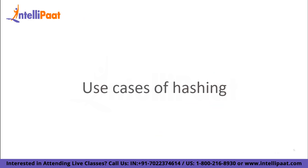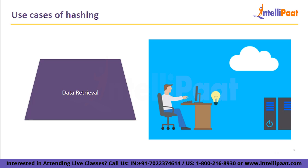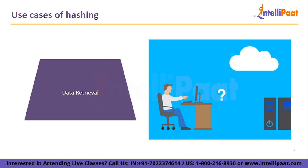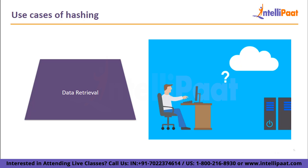Let us take a look at the use cases of hashing. First we have data retrieval. Hashing turns object data into a meaningful integer value using algorithms or functions. Once these items have been identified on an object data map, hash filters can be used to filter searches. For instance, programmers use hash tables to store data in the form of key and value pairs such as customer records. Keys are used to identify data and are fed to the hash function, while hash codes are translated to integers of a fixed size.